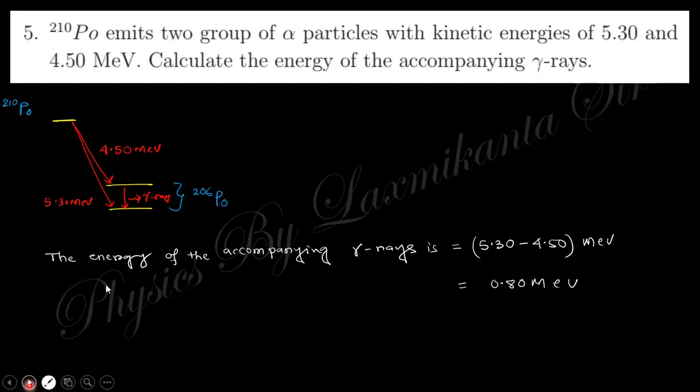Next question says polonium-210 emits two groups of alpha particles with kinetic energies 5.30 and 4.53 MeV. Calculate the energy according to the gamma ray. So there are alpha particles ejected with two types of energy. That means there are two energy levels of this, so the energy of gamma will be the difference of these two energy levels.